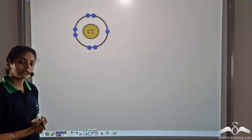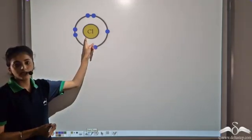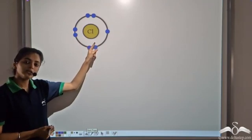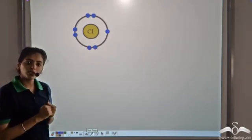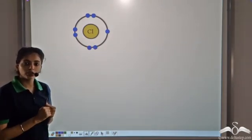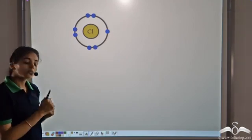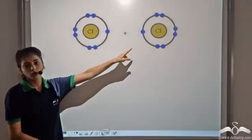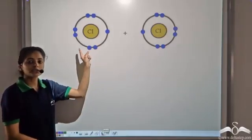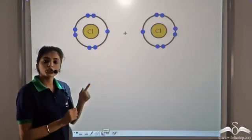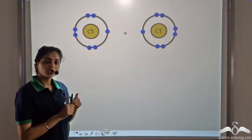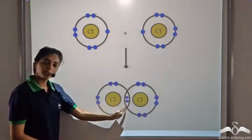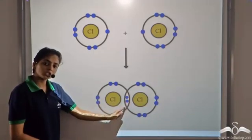Let's take another example. We have a Chlorine atom. Chlorine has seven electrons in the valence shell, and it needs one more electron to satisfy the octet rule. So it shares one more electron with another Chlorine atom. Both the Chlorine atoms are short of one electron, so they share one electron each.